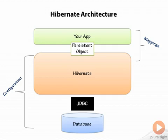Hibernate also uses JNDI and JTA for communicating with an application container like JBoss and managing transactions, but we aren't going to get into those scenarios very much in this course. So, Hibernate basically works by reading a configuration file which tells it what database to talk to and how to talk to it, and then reading mapping files that tell it how to map Java objects to relational tables. You write Java code that uses the Hibernate API to do things like save or update your data or query objects from Hibernate.